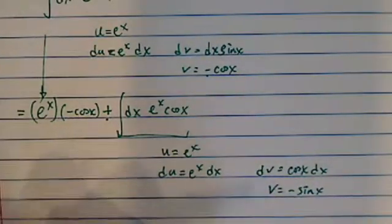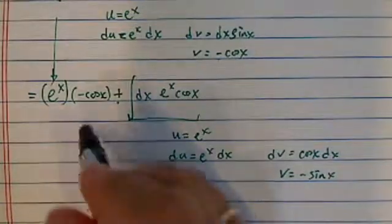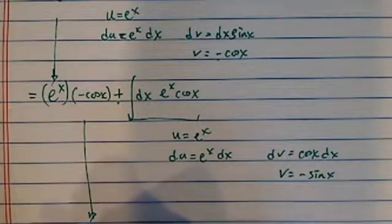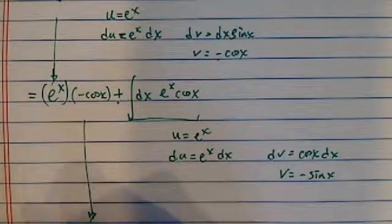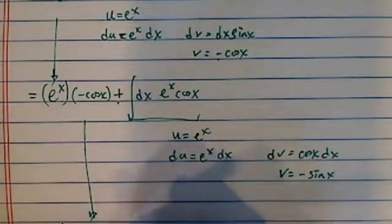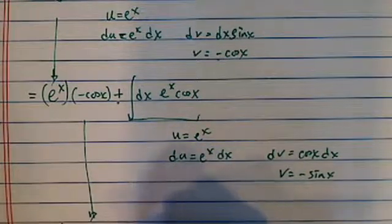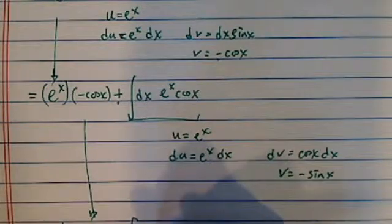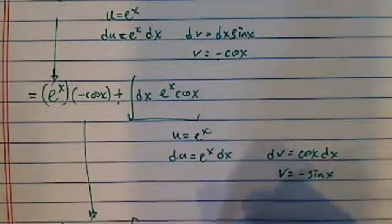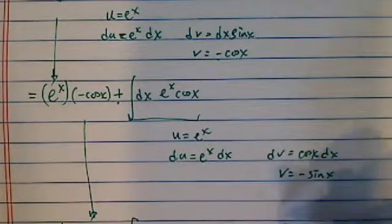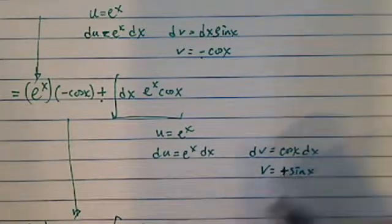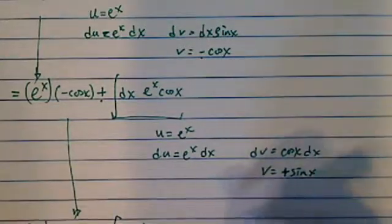So it's e^x minus cosine x, plus uv here which is e^x minus sine x, minus, plus... This is plus, this is minus here.